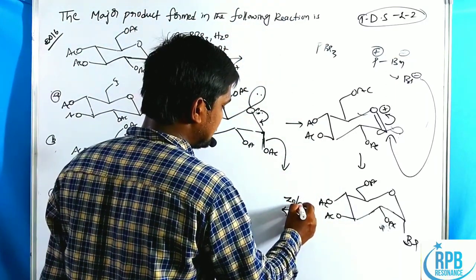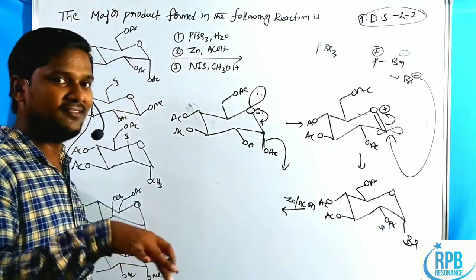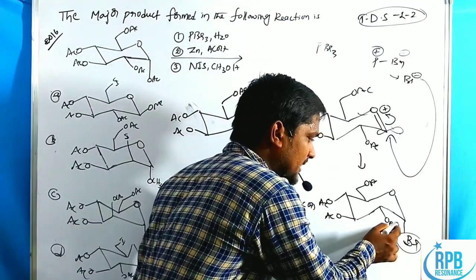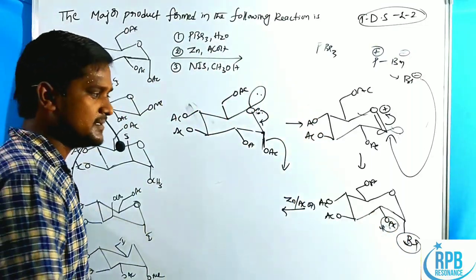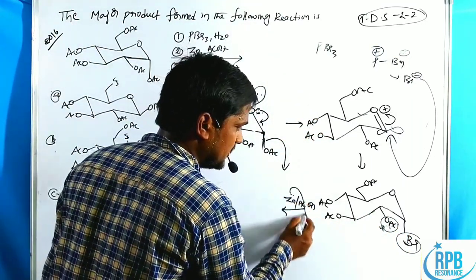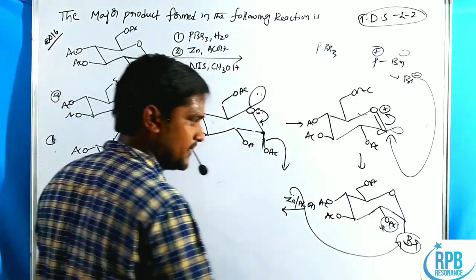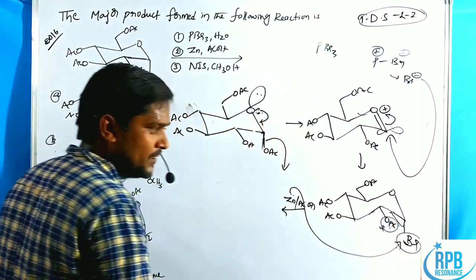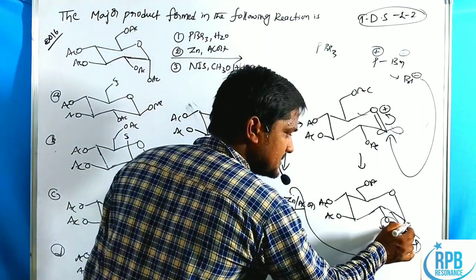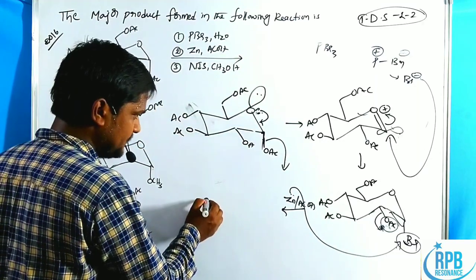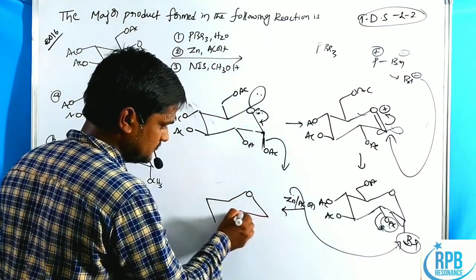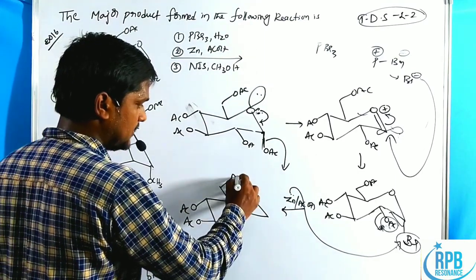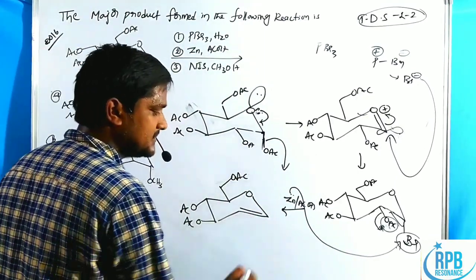In the second step, they are given a reducing agent: zinc and acetic acid. This helps eliminate our bromine along with the adjacent OAC group. The zinc atom abstracts the bromide ion, and the bonding electrons shift towards the adjacent bond, creating a double bond — elimination takes place, leaving OAC groups at the remaining positions.